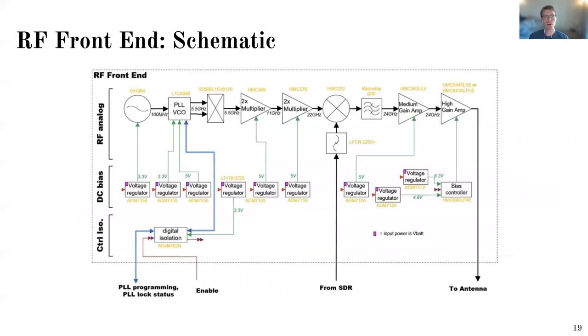So moving on now to the RF front end. So the RF front end, again, takes in a low frequency baseband signal from the SDR, and then it outputs the 24 gigahertz amplified signal. So shown here is just the RF chain, which is fairly straightforward. This section here is essentially a local oscillator that just outputs 22 gigahertz. And then there's a single stage mixing stage here. And then there's a band pass filter. And then we go through two amplification stages.